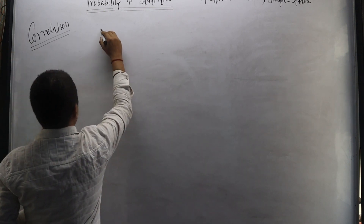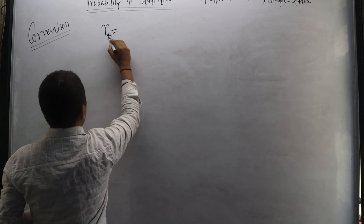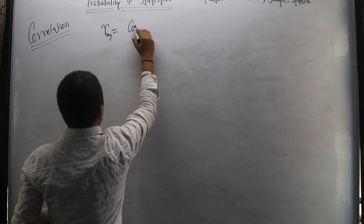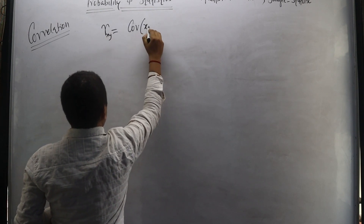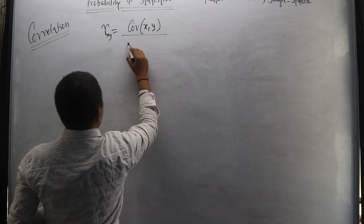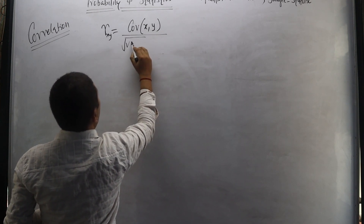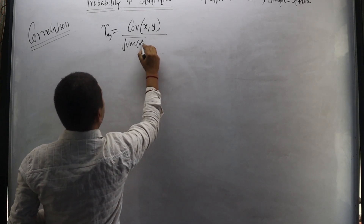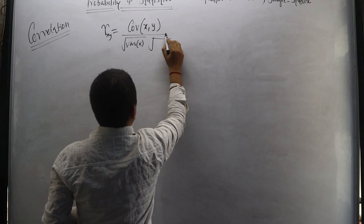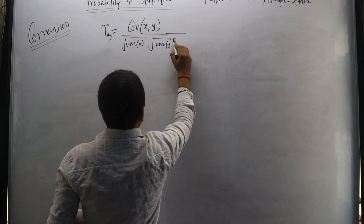So let us write the formula for correlation. Correlation between x and y equals covariance of x, y, divided by the square root of variance of x and the square root of variance of y.